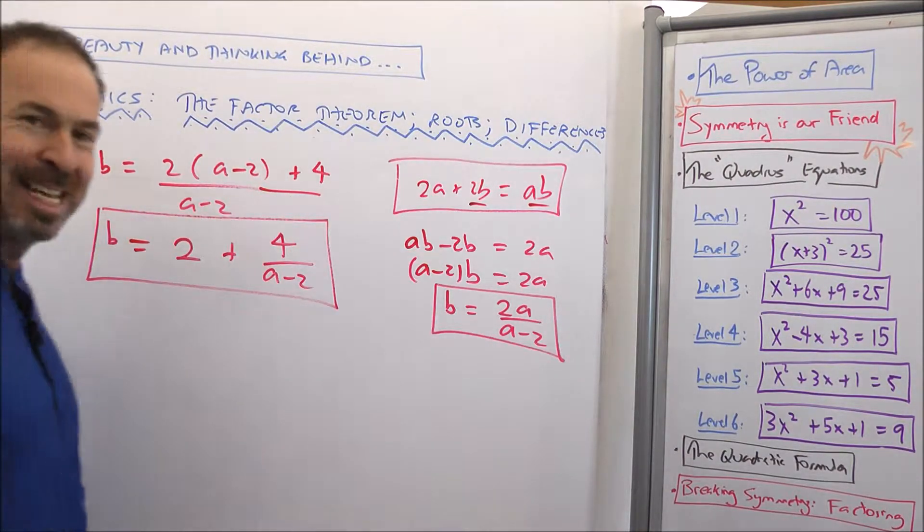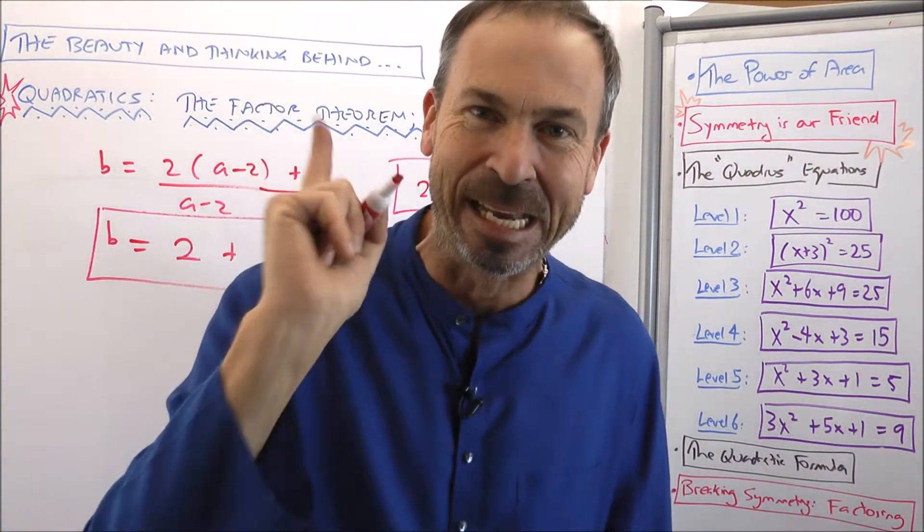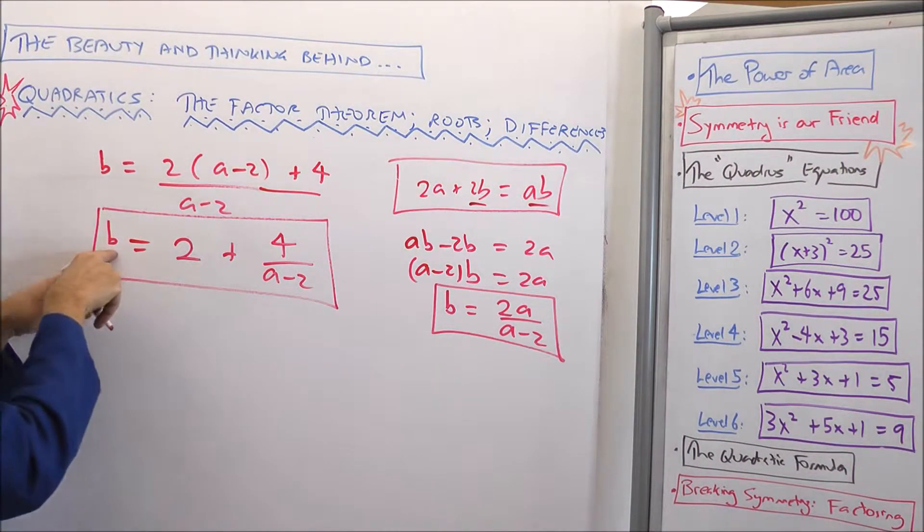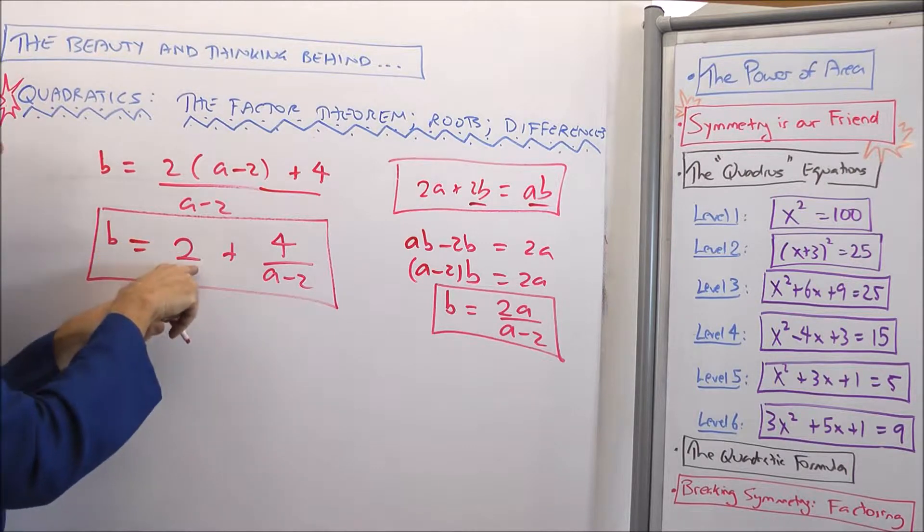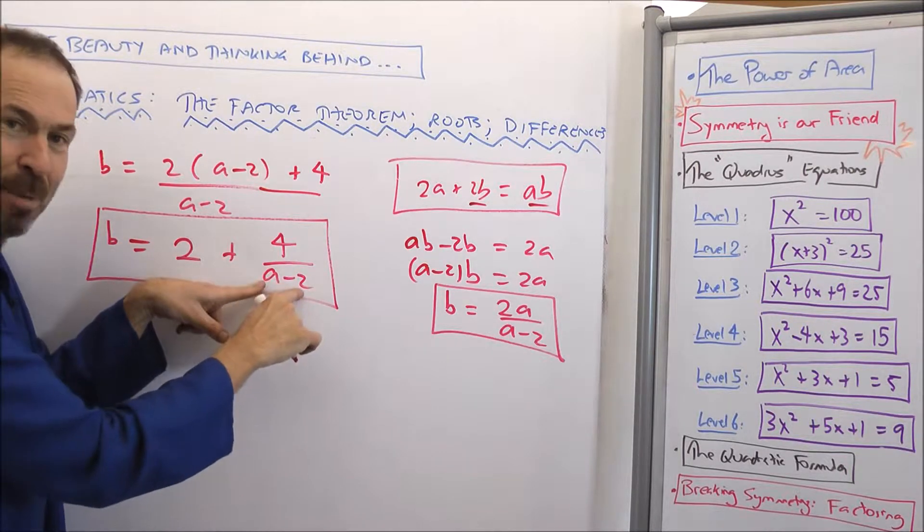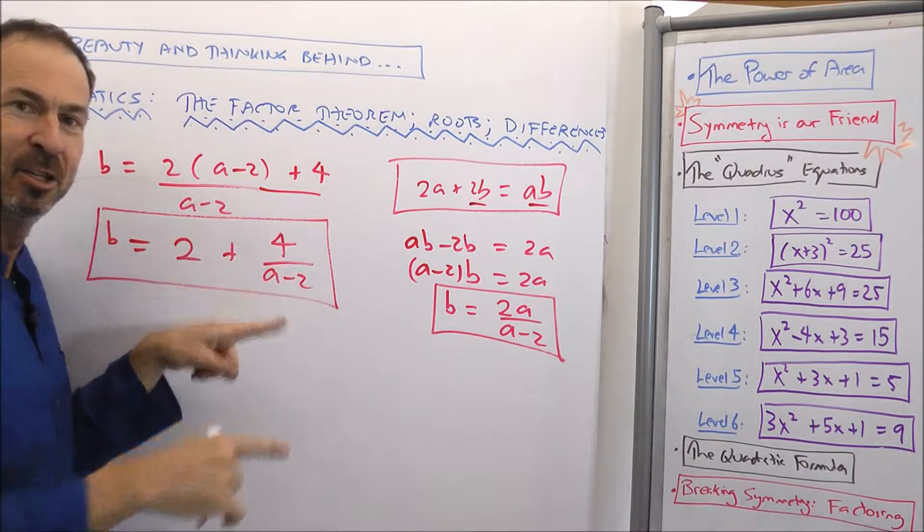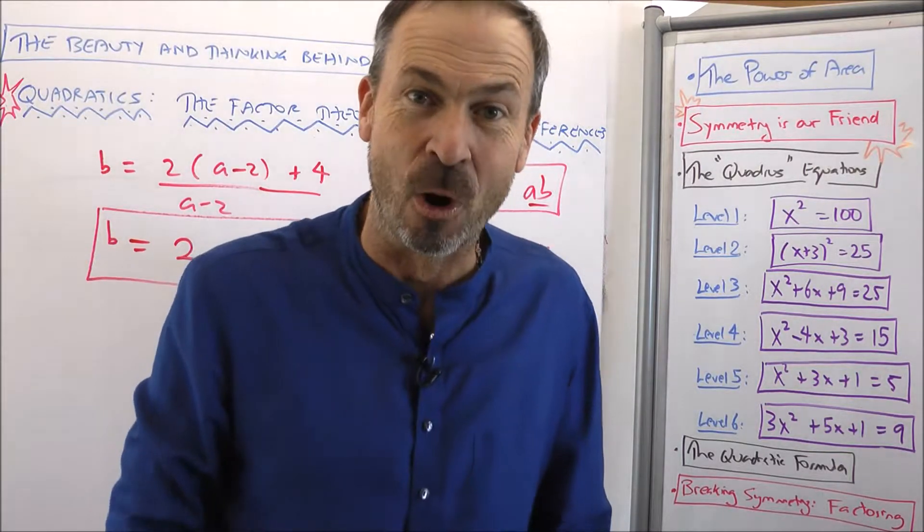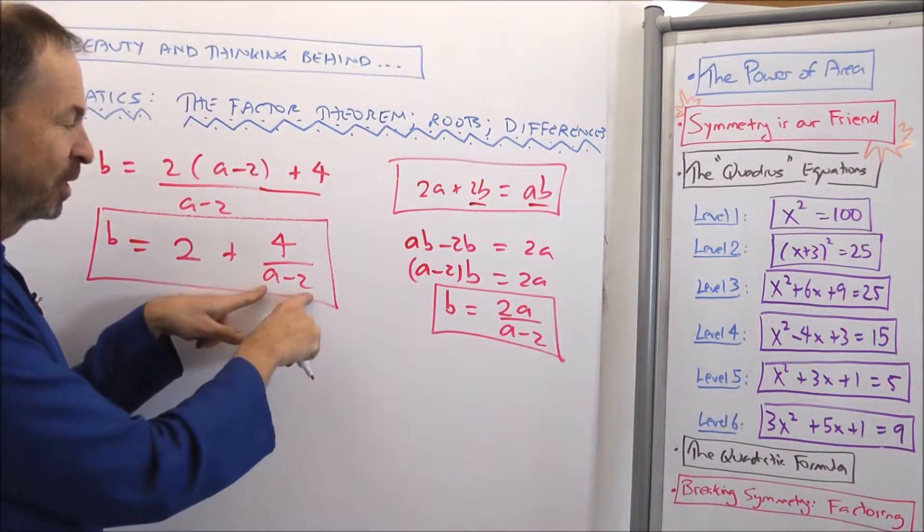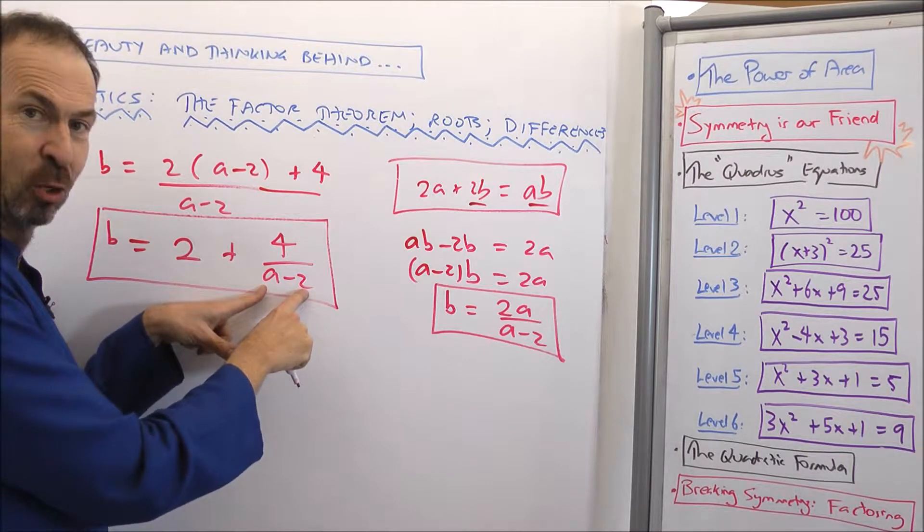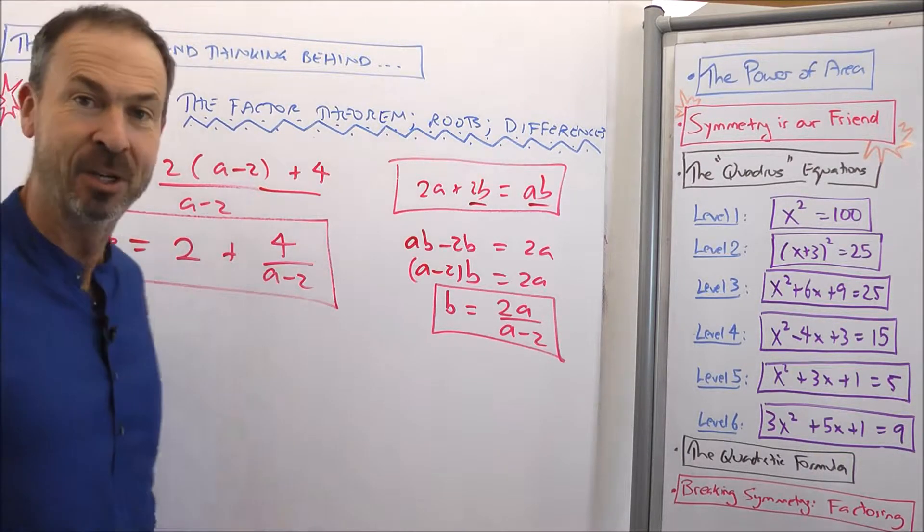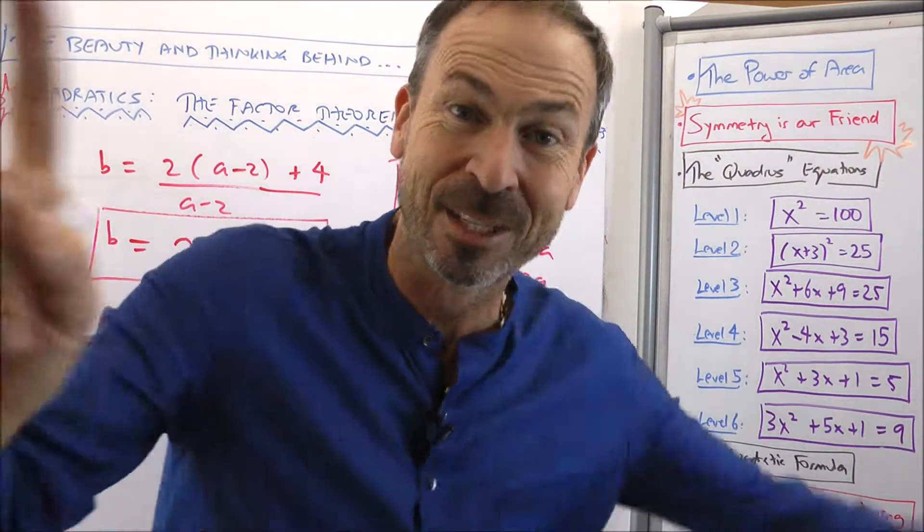That was fast and sneaky, but I like it. Because now I can look at the structure and see something. If I want b to be an integer, I need (a - 2) to be a factor of 4. There are only three factors of four: one, two, and four. So either (a - 2) is 1, or (a - 2) is 2, or (a - 2) is 4. Those are the only possibilities. Let's do it.